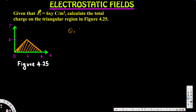Since we have the charge density, we can directly calculate the total charge using this formula: Q is equal to the integral over the surface of the charge density with respect to the surface. This is the equation we are going to use to find the charge. Now we have to know the limits of integration in order to do this.